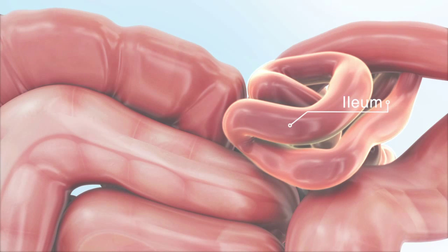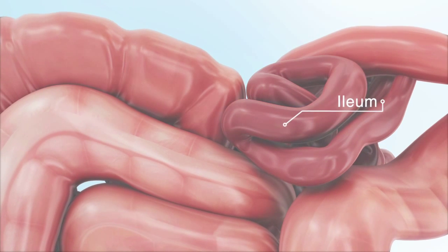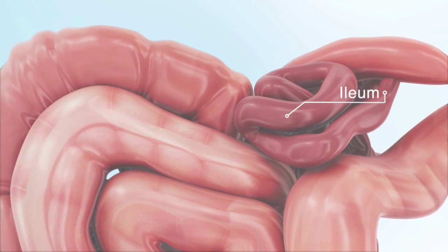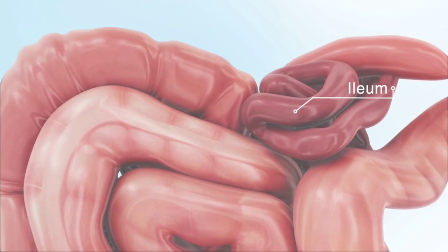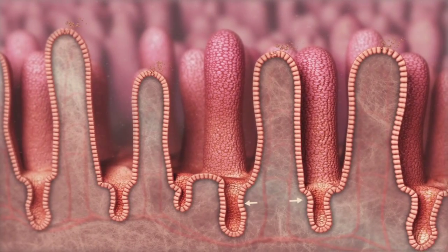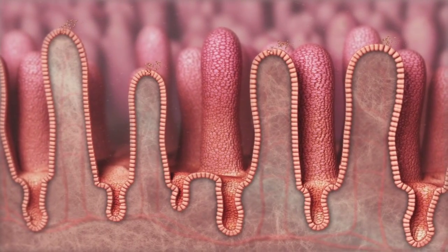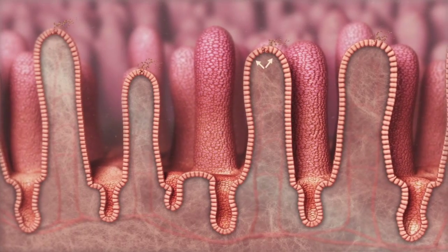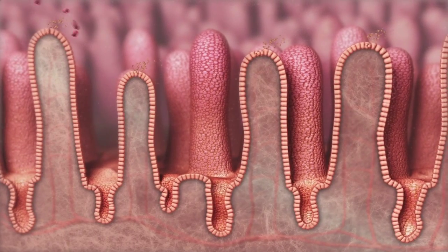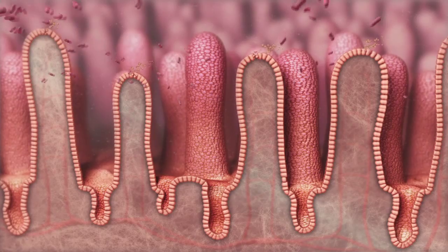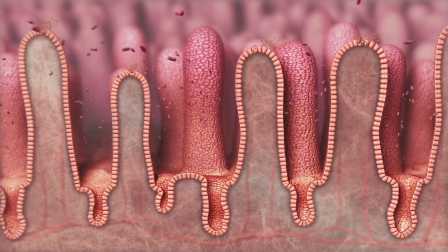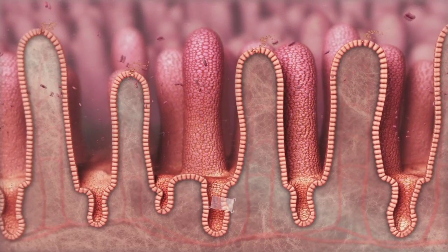The ileum provides perfect conditions for the bacterium to invade the intestinal cells and multiply there. The ileum's villi and crypts are renewed continuously. The invading Lawsonia bacteria utilize the high proliferation rate of the cells at the basis of the crypts for their own multiplication.